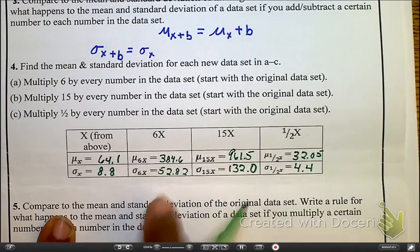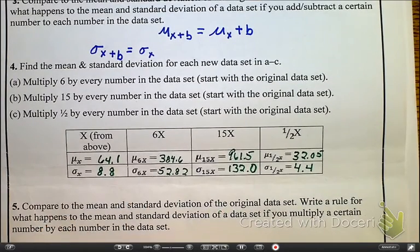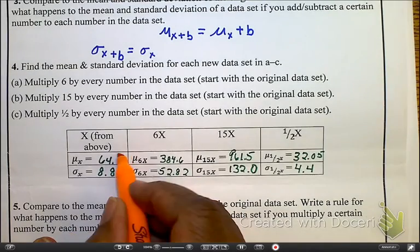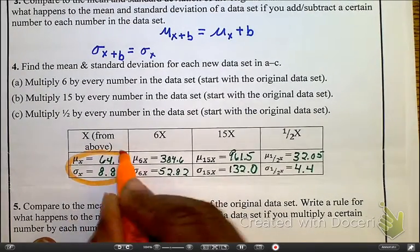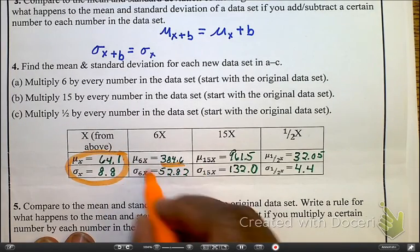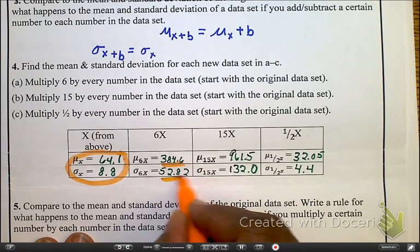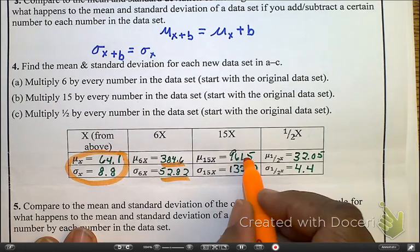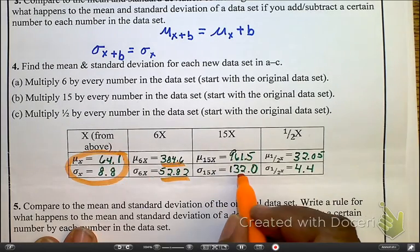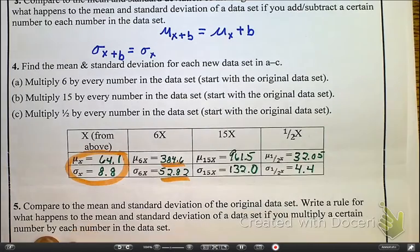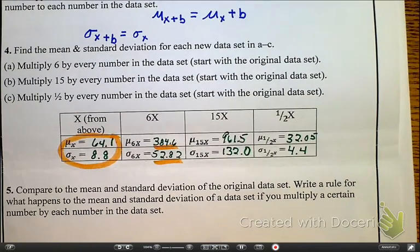Now, go ahead and check your answers. As you look at this, as you compare it to the first mean and standard deviation that you have, what's the difference between this value and that value? Well, it's this times 6. What's the difference between this value and that value? It's times 6. This value and that value, this is 15 times that. Here, this is 15 times that. Here, this is a half. So, from there we should be able to come up with our general rule.